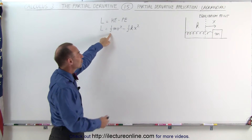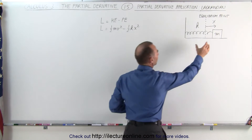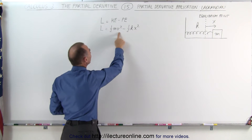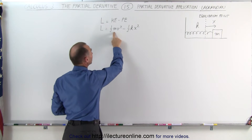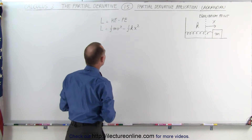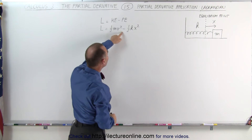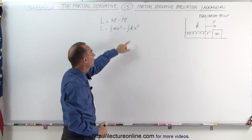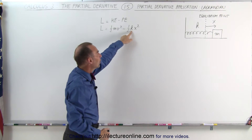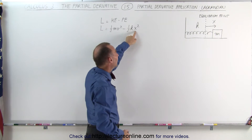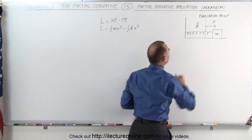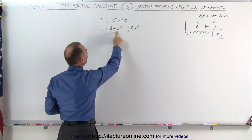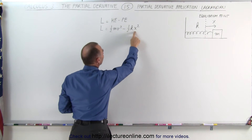The kinetic energy of a particle attached to a spring, which oscillates back and forth, is going to be equal to 1/2 mv squared, m being the mass of the particle, v being the velocity of the particle, minus the potential energy, which is stored in the compressed or elongated spring — 1/2 kx squared — where k is the spring constant, and x is the distance away from the equilibrium point. This is a function of the variable v, the velocity, and of the variable x, the position.